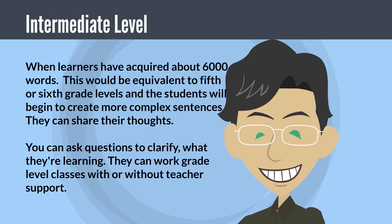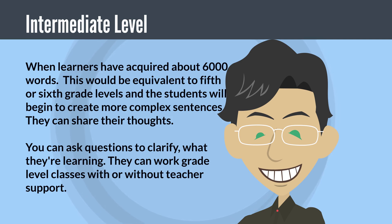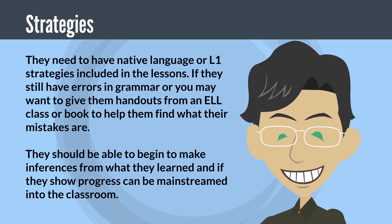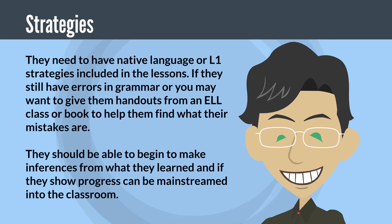Intermediate fluency is when learners have acquired about 6,000 words, equivalent to 5th or 6th grade levels. Students will begin to create more complex sentences and can share their thoughts. You can ask questions to clarify what they're learning and they can work in grade-level classes with or without teacher support. They need native language or L1 strategies included in the lessons. If they still have grammar errors, give them handouts from an ELL class or book to help them identify their mistakes. They should be able to make inferences from what they've learned and, if they show progress, can be mainstreamed into the classroom.